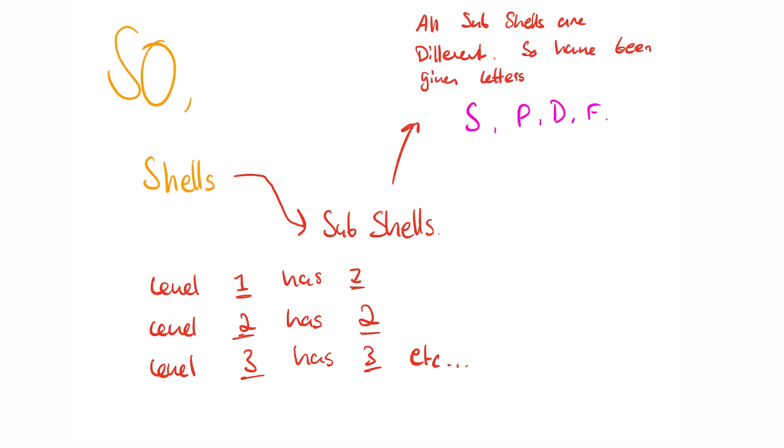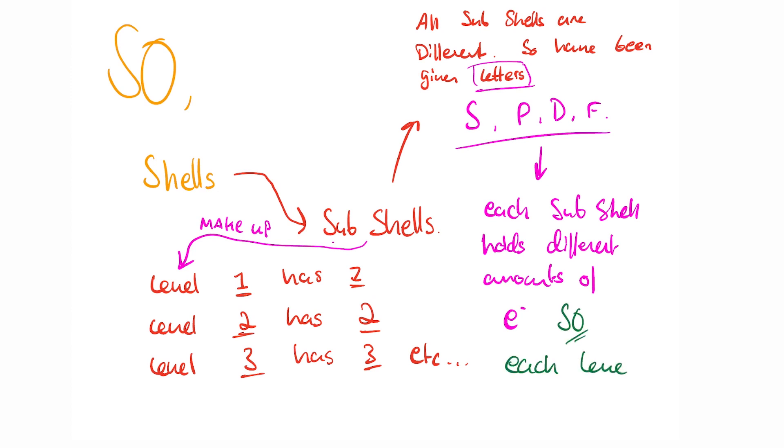S, P, D and F. These subshells remember make up these principal energy levels and these subshells can hold different numbers of electrons. Because of this, the different principal energy levels can hold different amounts of electrons too. Depending on the letter, a different amount of electrons can be held by a subshell.